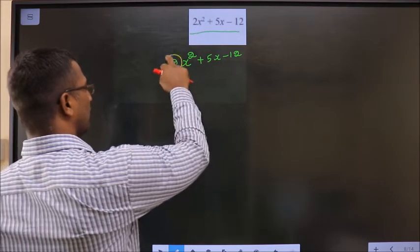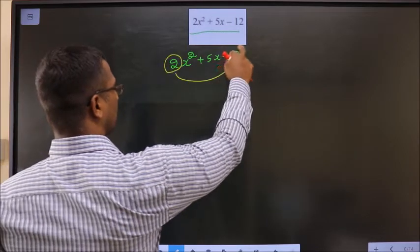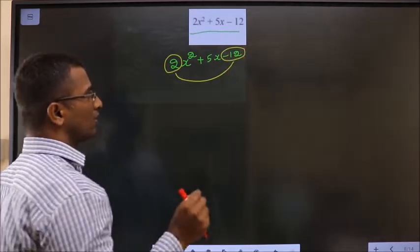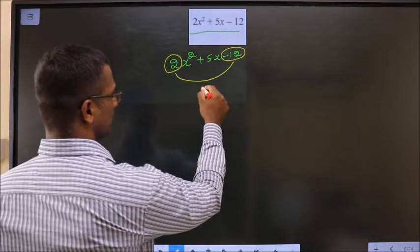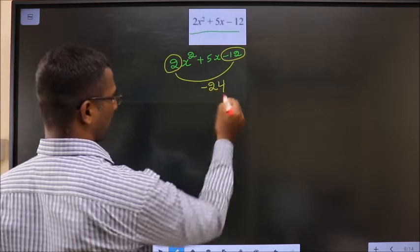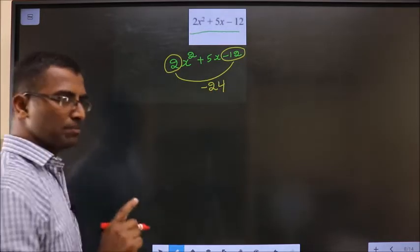Whatever you have here should be multiplied with a constant. So 2 times minus 12 is minus 24. That is step 1.